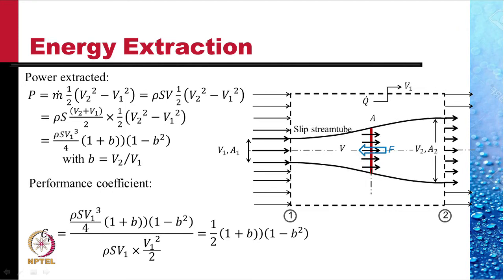The power extracted would be simply mass flow rate times the energy extracted per unit mass throughput. And that is shown to be equal to rho S V1 cube divided by 4 into 1 plus B into 1 minus B square with B as the velocity ratio V2 by V1.